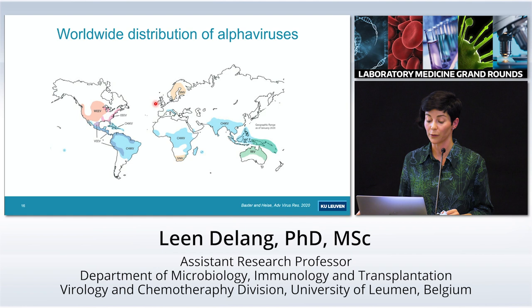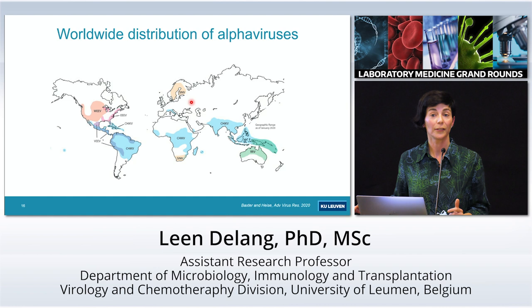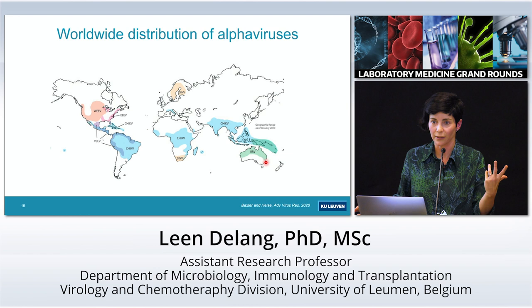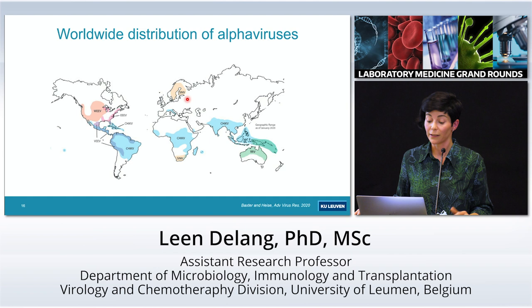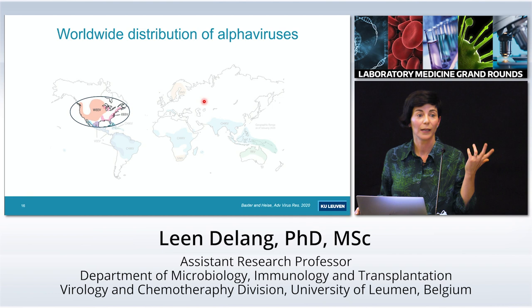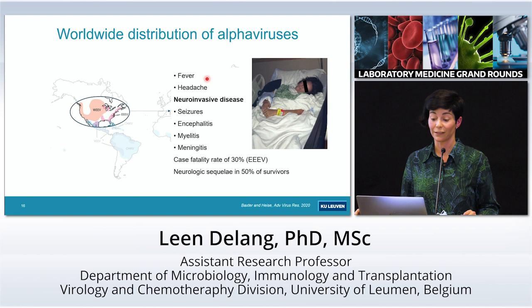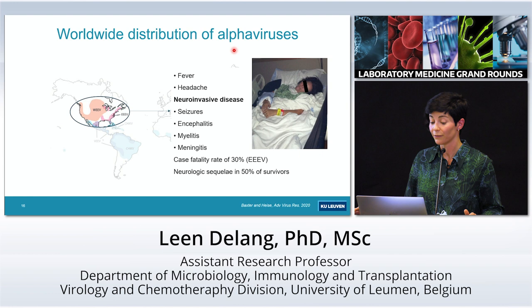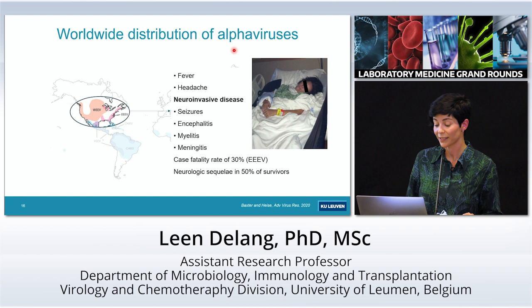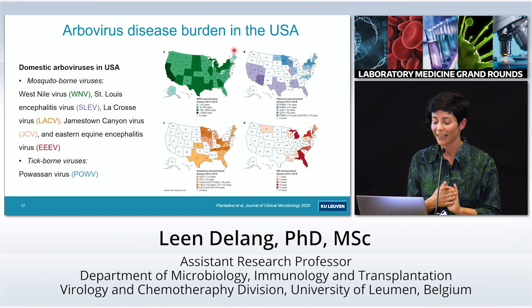Chikungunya virus is the most widespread alphavirus, present almost all over the world, with outbreaks in Europe, especially Italy. There are other alphaviruses in different regions: Ross River virus in Australia, Sindbis virus in northern Europe, and in the United States, the equine encephalitis viruses including Western and Eastern equine encephalitis virus. The Eastern equine encephalitis virus is particularly dangerous with a 30% case fatality rate, and in 50% of survivors there will be neurological sequelae.